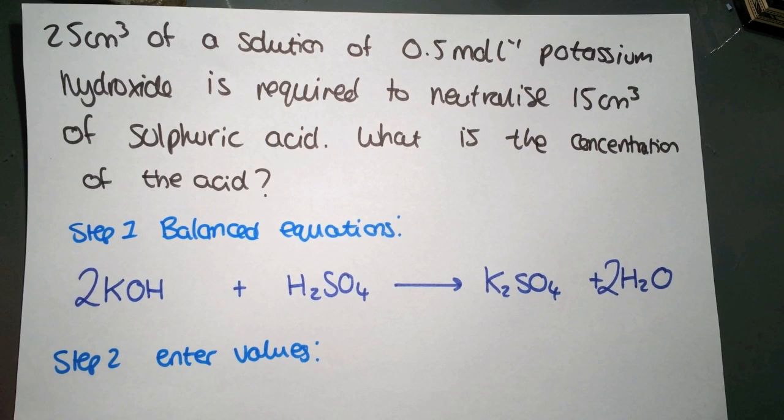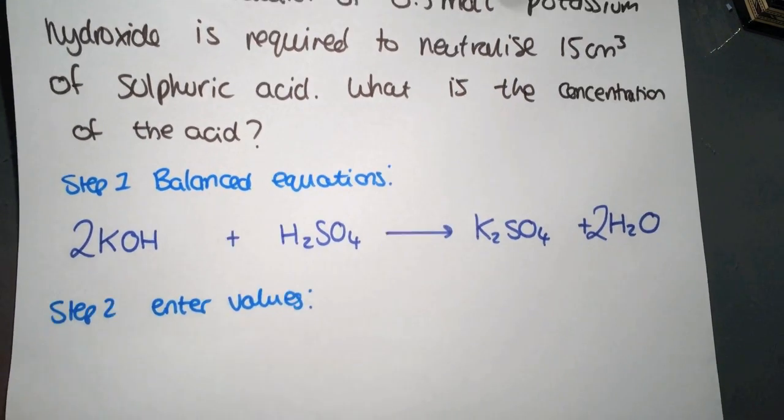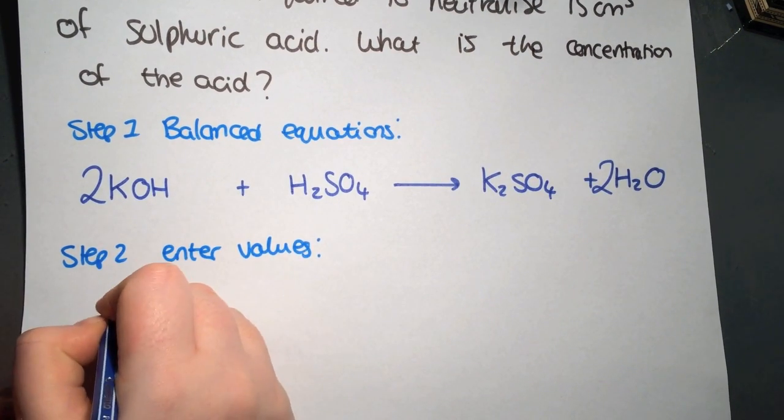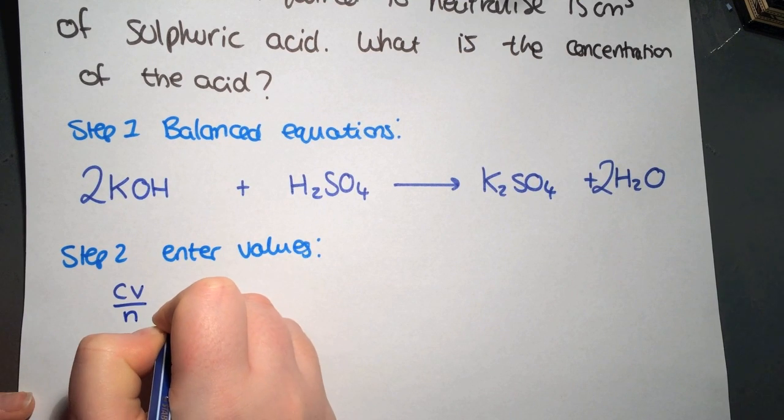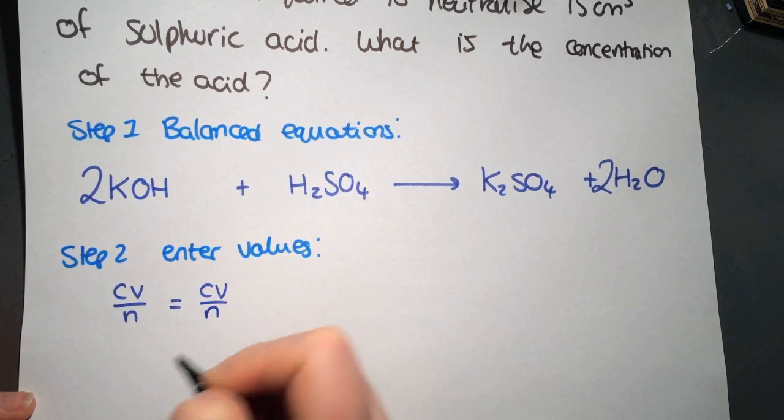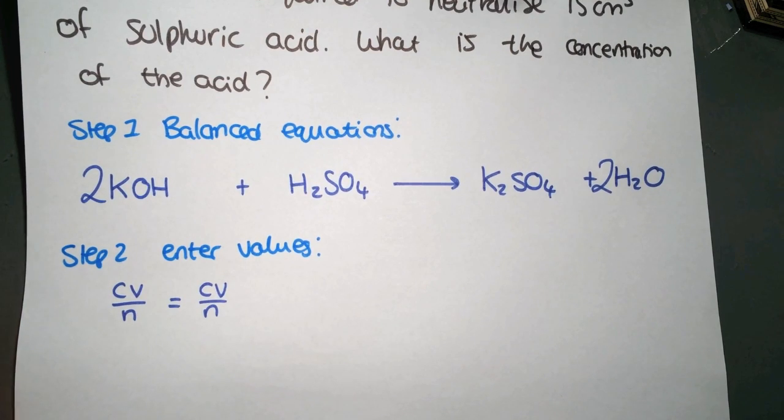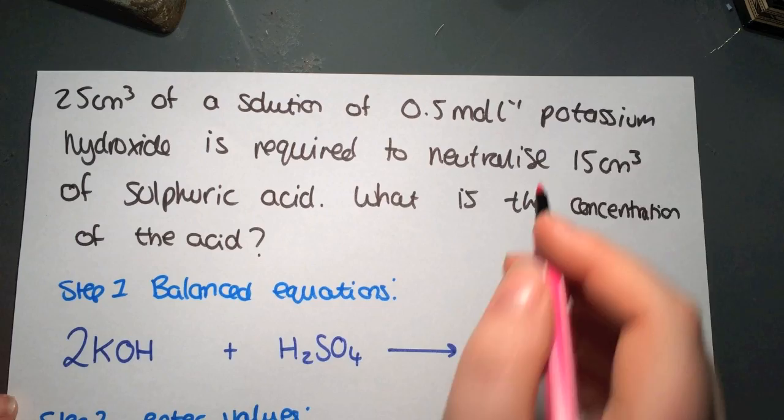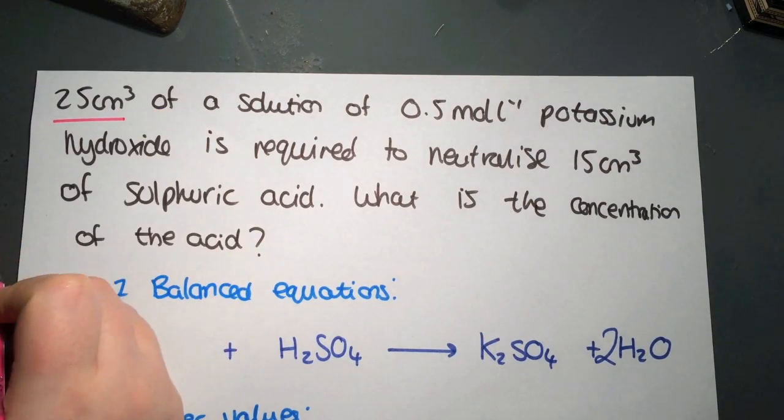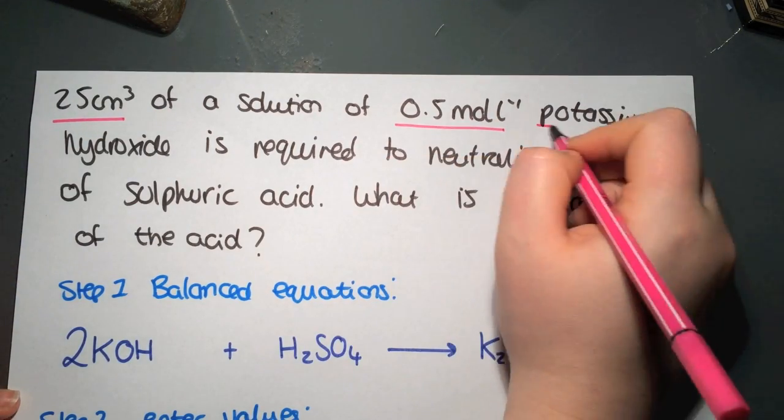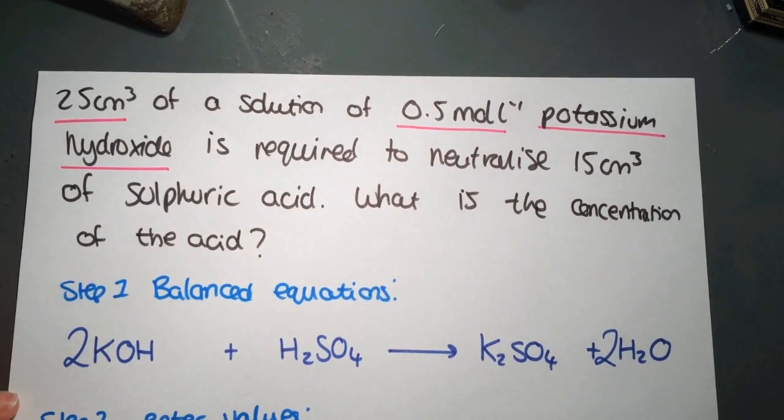Balancing is very important for us to be able to get our values correct. So again we're using CV divided by N equals CV divided by N. Let's have a look at the information.